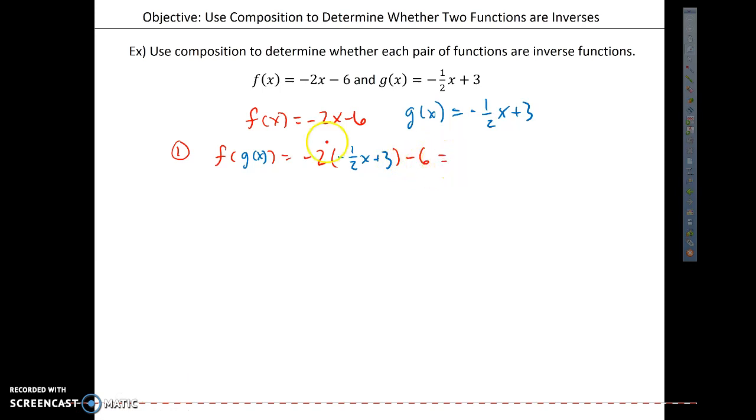So, when I distribute negative 2 times negative 1 half, well, that is a positive x. Negative 2 times a positive 3 gives us a negative 6. And I have my negative 6 here. And at this point, the alarms in your head should be going off. You should say, hey, those 6s didn't cancel. I now have x minus 12, which is not equal to x.